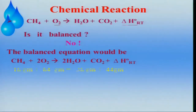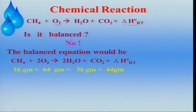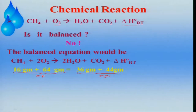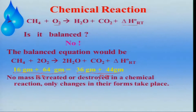If we look at mass: 16 grams of methane reacting with 64 grams of oxygen gives 36 grams of water and 44 grams of carbon dioxide. On the left-hand side that is 80 grams, and on the right-hand side it is also 80 grams. This indicates that mass is conserved — no mass is created or destroyed in a chemical reaction; only the change in form takes place.